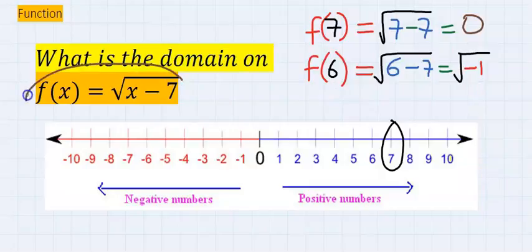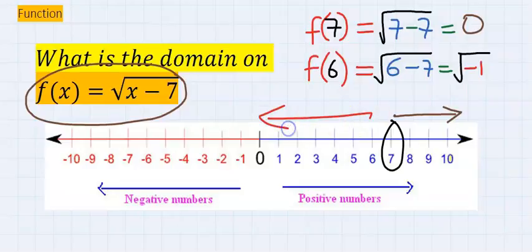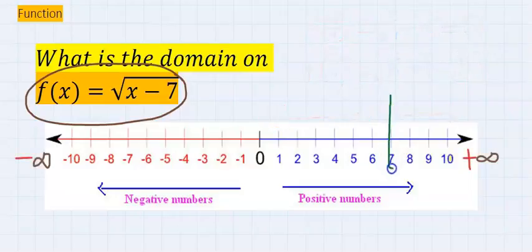If this function must continue, that means x must not take any value that is below 7. Any domain, that is x value, taken towards this direction we generate a complex root. Hence our border line on this number line ends here.